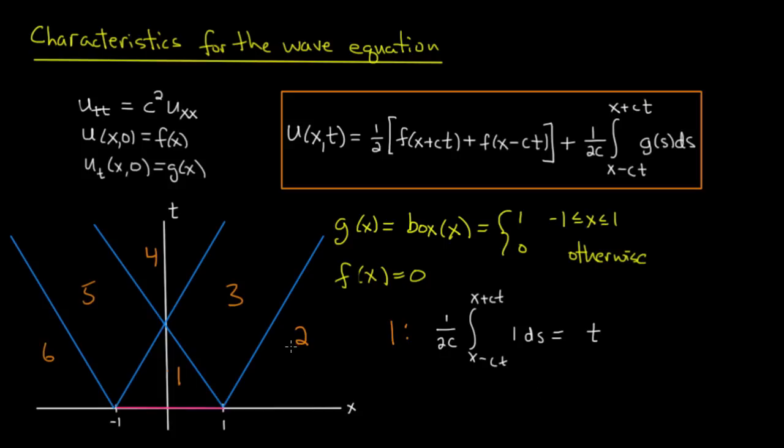Let's look at region 2 now. So if I'm in region 2 and I choose a point and I trace back along characteristic lines, in between those two points that I trace back to, x-ct and x+ct, g will be 0. So I'll get nothing but 0 for this integral. The same thing goes for region 6.